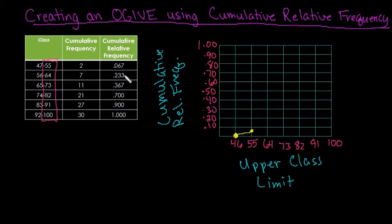By the end of 64, we had 23.3% of our data. So we would go above the 20. And then we would see that that is a much steeper increase, so there were more that fell in this category than in the last. By the end of 73, we were up to 36.7%, so almost 40. So it was not quite as steep of an increase between those two values.